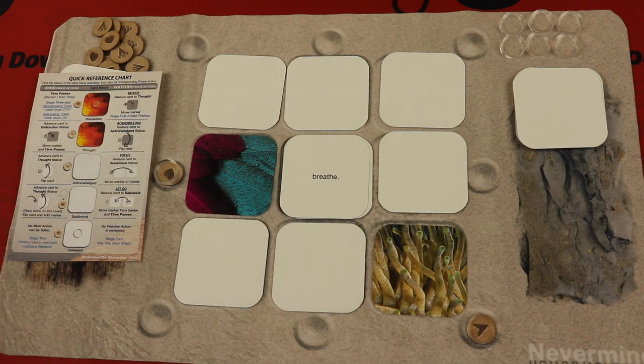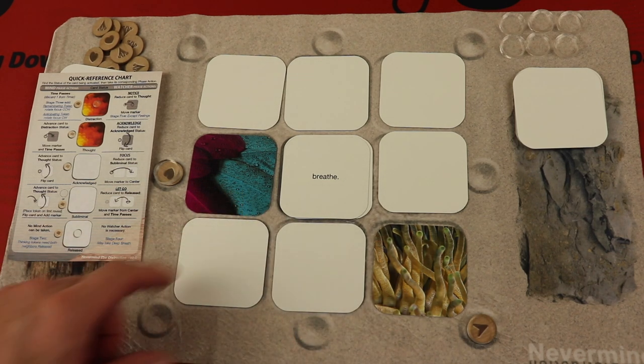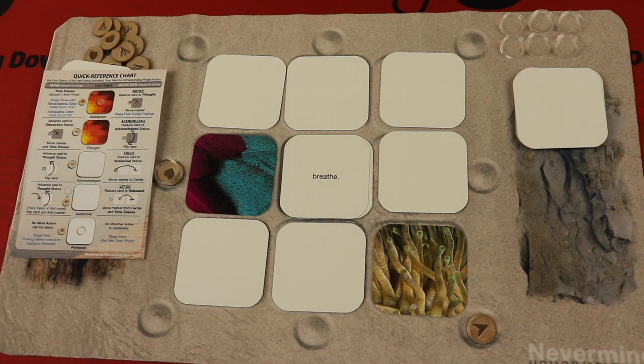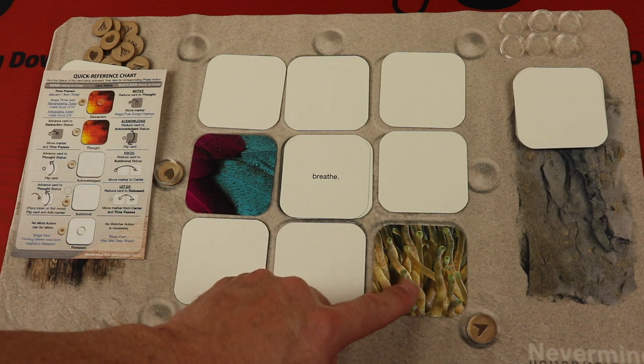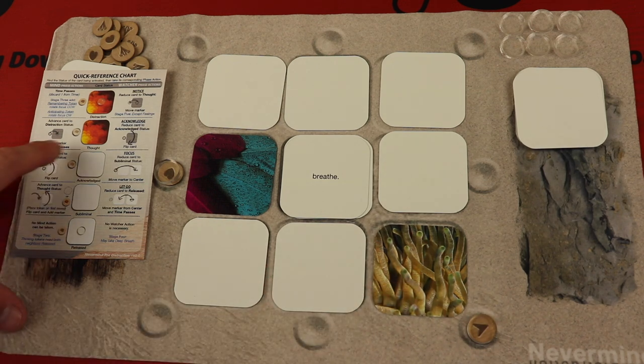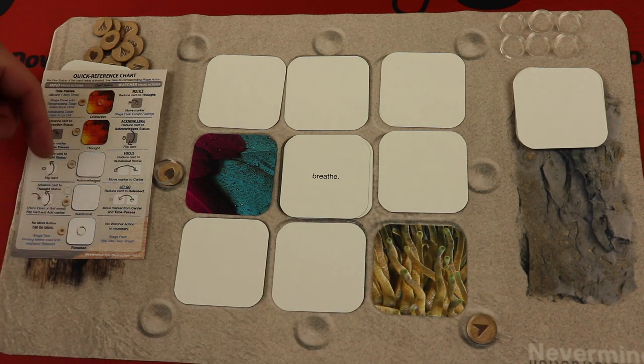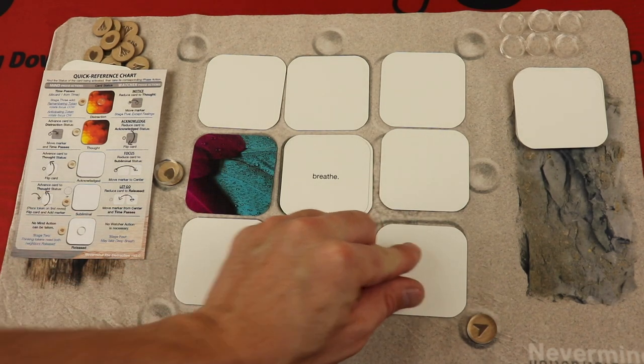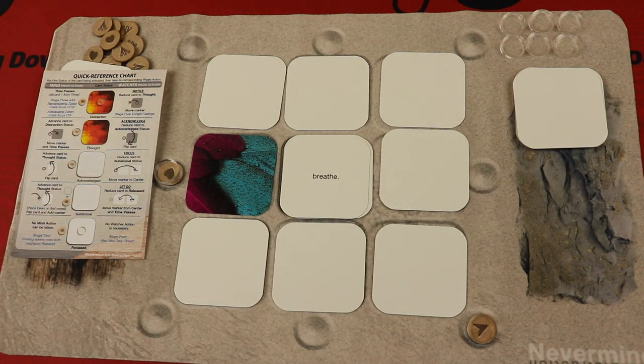So the way the game works is it just goes back and forth with the mind taking a turn, then us. However, in the first round the mind doesn't get to take a turn. So let's show you the different things that you can do depending on the stage that the cards are in. For example, these are thoughts, right? They're right here. So if you wanted to take an action, you could take one of these cards and you're essentially going to have it go from thought to acknowledge, pulling it towards you. So essentially flipping this card, and now you've just made it go from a thought back to acknowledged.